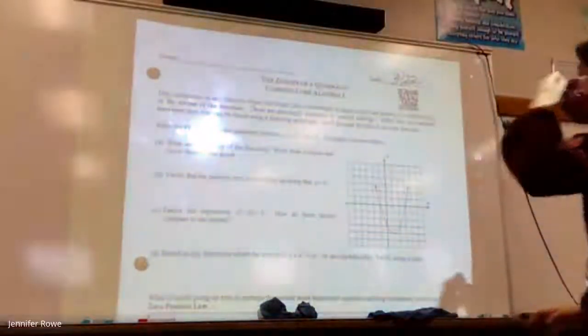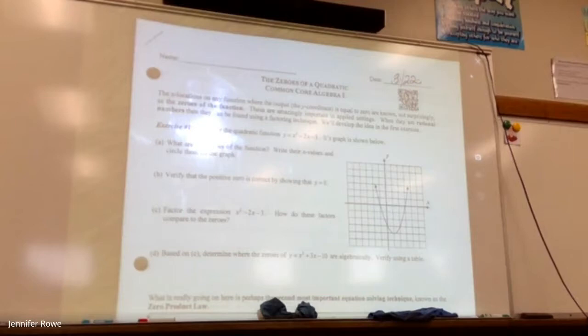Now that we have all the other steps, the x location on any function where the output or the y coordinate is equal to zero are known, not surprisingly, as the zeros of the function. These are amazingly important in applied settings. When they are rational numbers, they can be found using a factoring technique. Basically the zeros are where the graph touches the x-axis. When the y number is zero, that's a zero of a quadratic.